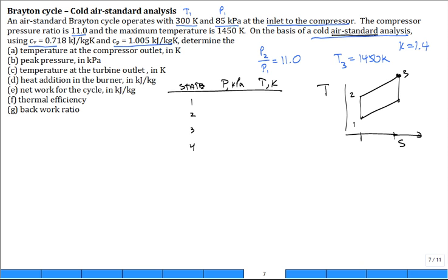Those things for the air standard, now with the cold, that's an additional assumption that we're going to use constant specific heats evaluated at room temperature, atmospheric ambient temperature. Even though the temperature is spanking hot at state 3, it's up to 1450 Kelvin, we'll just use it around 300 Kelvin.